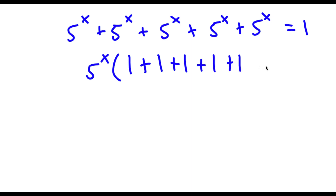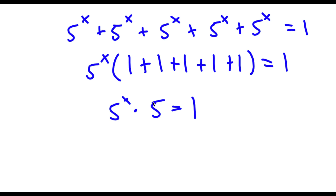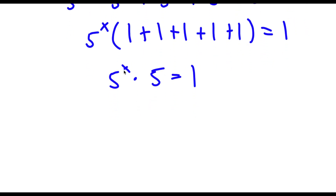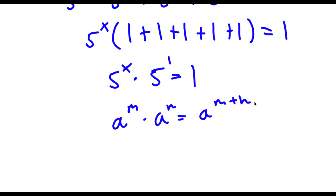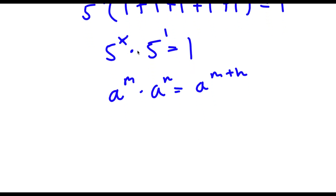If I simplify what's in the parentheses, I get 5 to the power of x times 5 is equal to 1. Now 5 here is the same thing as 5 to the power of 1. Using the rule that a to the power of m times a to the power of n equals a to the power of m plus n, we get 5 to the power of x plus 1 equals 1.